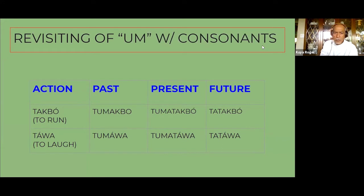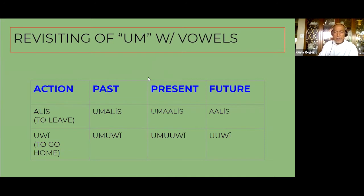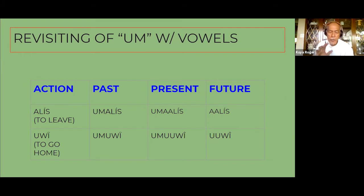Then finally the um-verb: tumakbo, tumatakbo, tatakbo — repeating the first syllable for the future. This is for verbs that start with a consonant. You put the um in between the first consonant and vowel, so takbo becomes tumakbo, tawa becomes tumawa. And if the verb starts with a vowel, it will always begin with um: umalis, umalis, umalis.